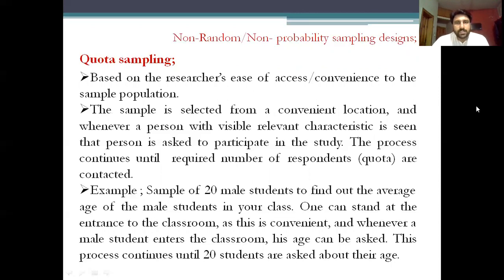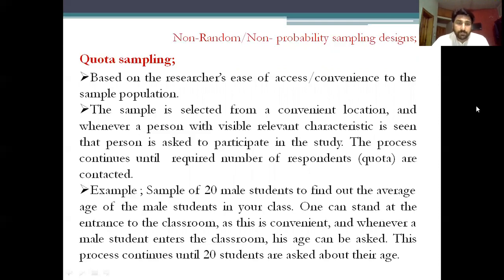For example in quota sampling: let's say you need a sample of 20 male students to find out the average age of male students in your class. A convenient approach is to stand at the entrance of the classroom. Whenever a male student enters, his age is asked and noted down. The process continues until 20 male students have been asked. Consent and other demographic information is collected as required, and once you reach the quota, the sampling is completed.